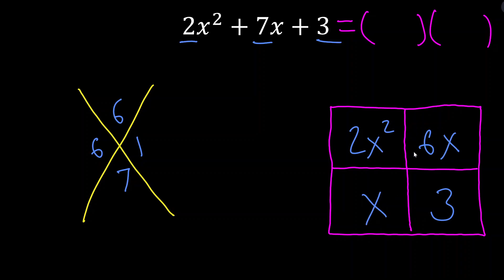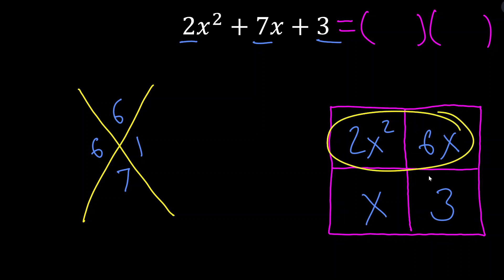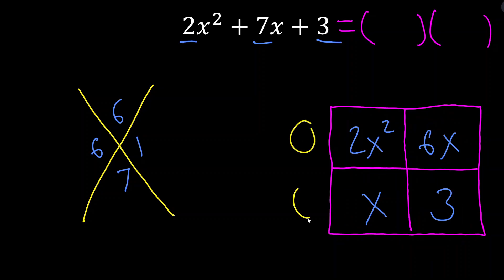I could put 6x here and x here, or x here and 6x here — it's going to work either way. Now our final step is to take out the greatest common factor (GCF) from each column and from each row. Those GCFs are exactly what goes in each of the outer spots.